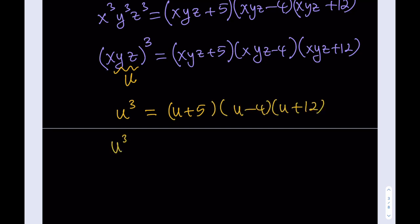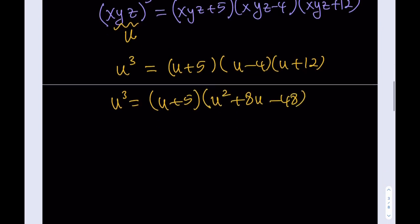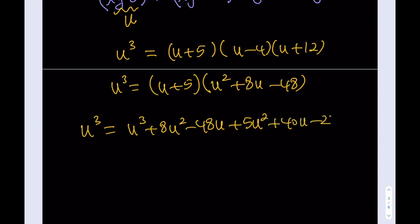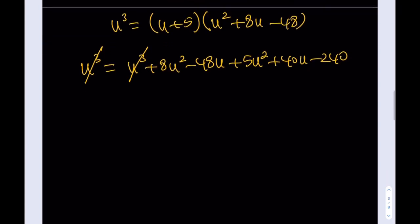Let's go ahead and distribute. Keeping u plus 5 and distributing the other two first gives u squared plus 8u minus 48. Then distributing further gives u cubed plus 8u squared minus 48u plus 5u squared plus 40u minus 240. What's really nice is that u cubed cancels out — we don't even have a cubic, we have a quadratic. Combining like terms: 13u squared minus 8u minus 240 equals 0.